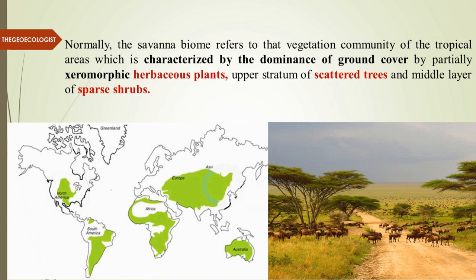Normally, the Savannah biome refers to the vegetation community of tropical or subtropical areas, characterized by dominance of grasses as ground cover — xerophytic and xeromorphic herbaceous plants — apart from that, scattered trees and sparse shrubs. This is the basic composition of the Savannah biome, and you can see the world distribution in the image.